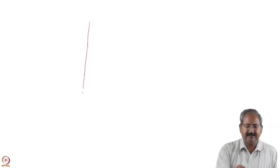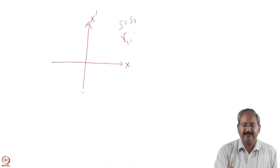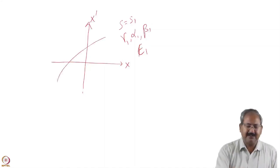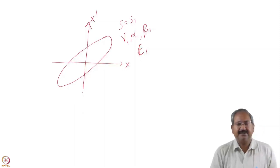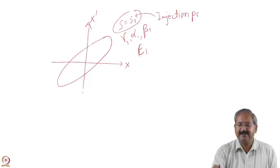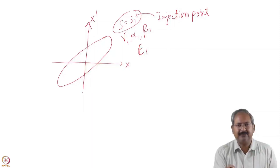Suppose at a location we are plotting the ellipse in the phase plane at a certain location, say s = s1. The optical parameters are γ₁, α₁, and β₁, and the invariant of motion, say it is emittance ε₁. This gives you an ellipse, and you can see this particular point is the injection point of the accelerator — meaning a beam of charged particles will be injected into this accelerator at this location.